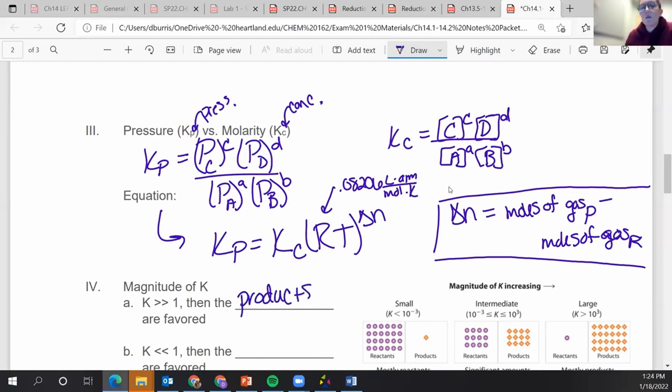Whereas if K is really small, that would mean I would have much bigger numbers on the bottom. So A and B would be favored. So the reactants are favored in that case.